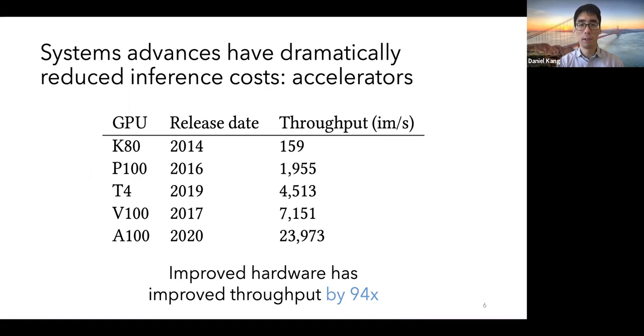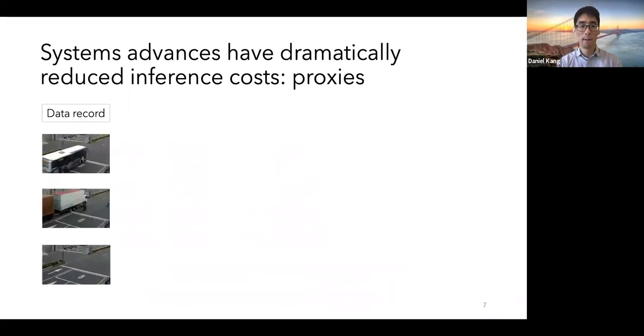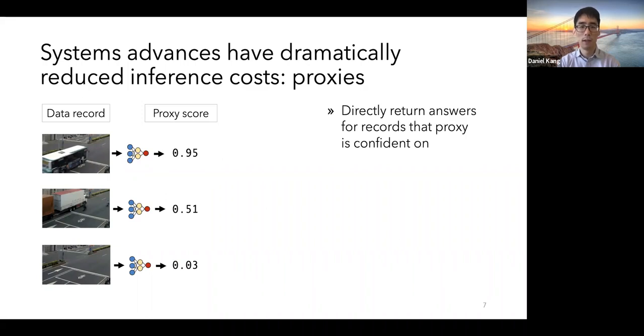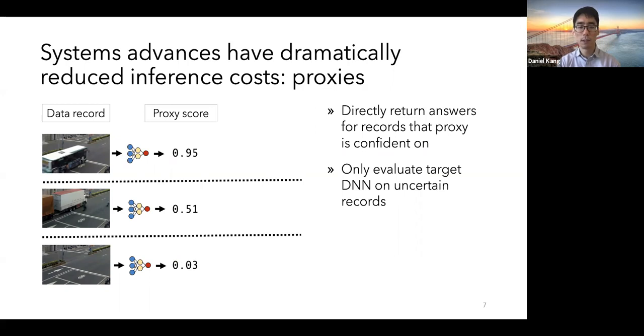Furthermore, there's been a lot of work in the analytics community to reduce inference costs in the form of using proxies. A standard way of doing it is to execute a substantially cheaper small model, which we call a proxy, over all the data to generate scores. And then these scores are used to directly answer records that the proxy is confident on, for example, top and bottom records here. And the expensive target deep neural network is only executed on uncertain records. In this particular example, we're trying to select buses, and the proxy is confused by the truck.